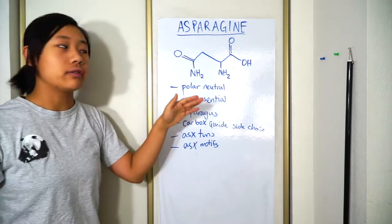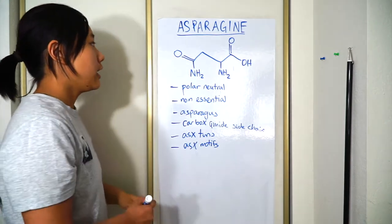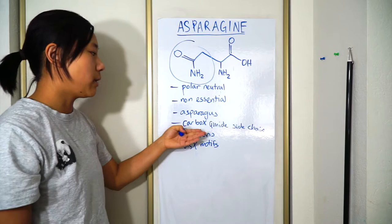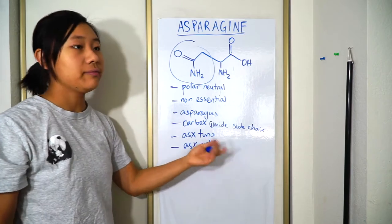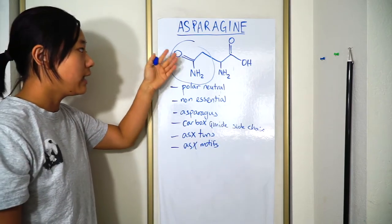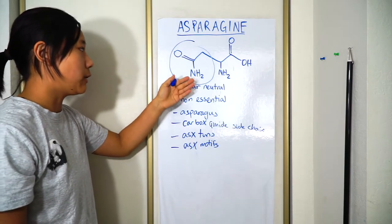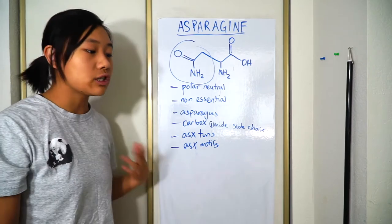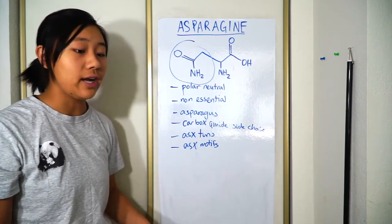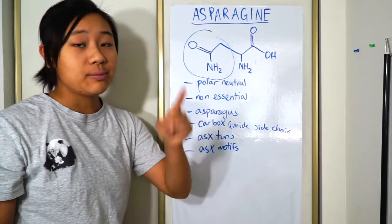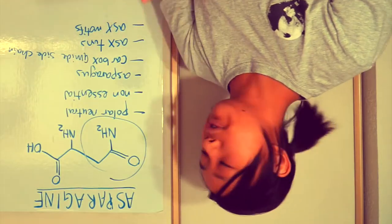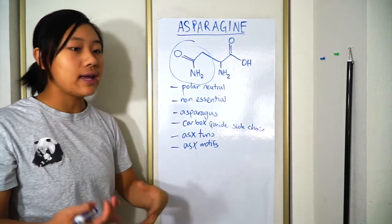Here's the molecular structure of asparagine. Here's the side chain, and this side chain is called a carboxamide side chain, which means it has a carboxyl group here and an amide group here — and that's what makes it polar. It's non-essential, which means you don't necessarily have to get it from your diet, so asparagus doesn't have to be in your diet necessarily. But vegetables and fiber are good for you.